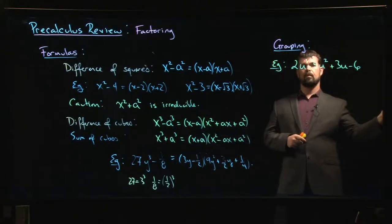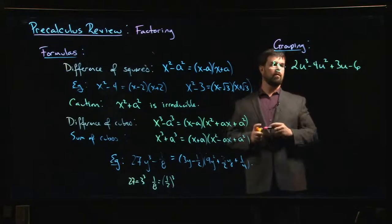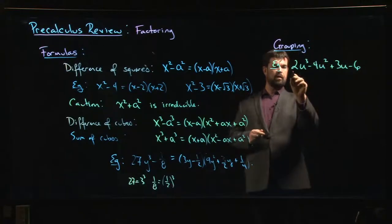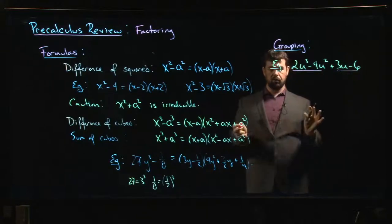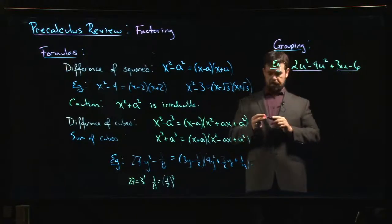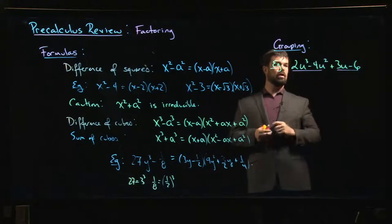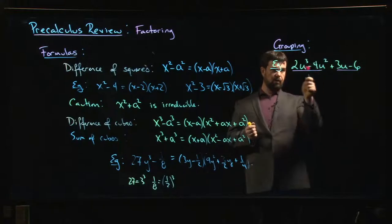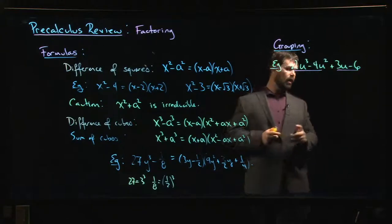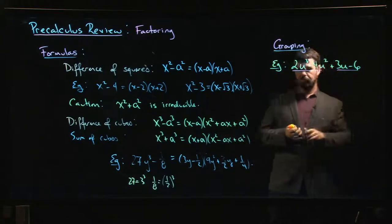So what you do here when you're factoring by grouping is you pair the first two and the last two terms. You set those aside and in the first two terms there is a u that's common to both. In fact there's a u squared that's common to both, and so what you do is you factor that out.